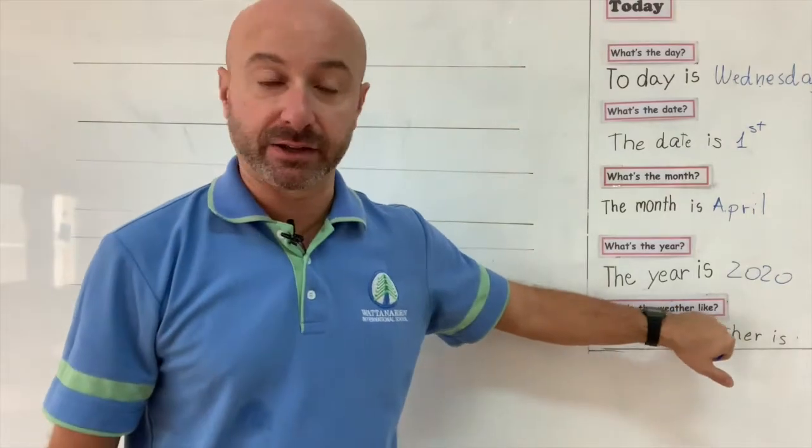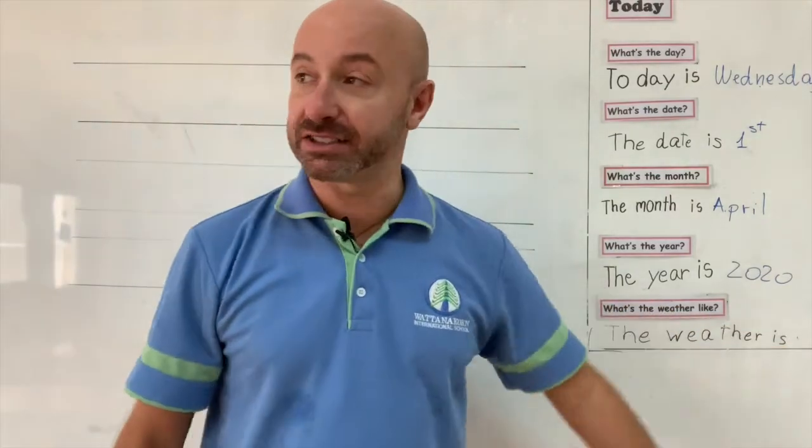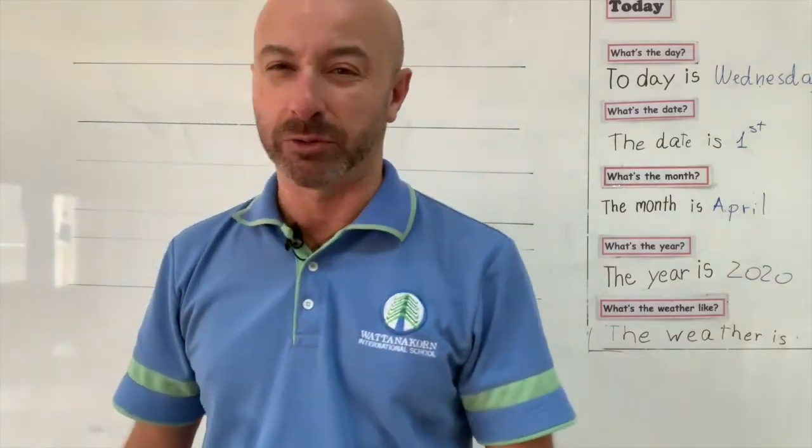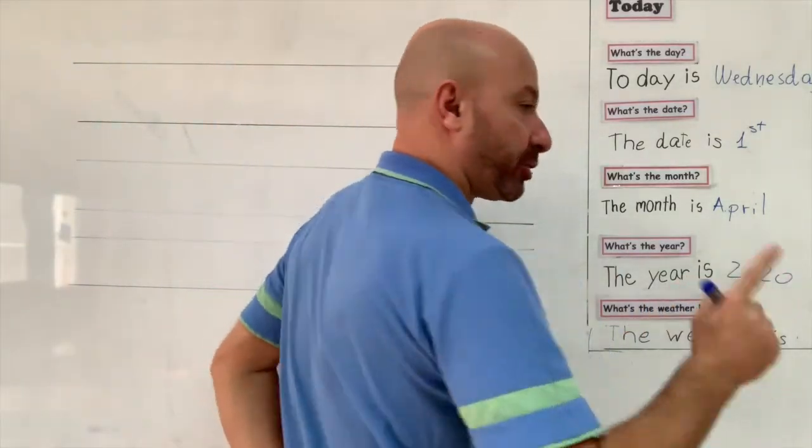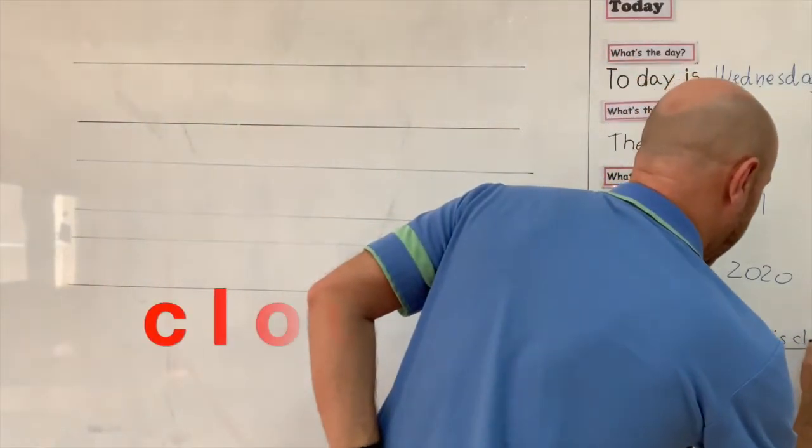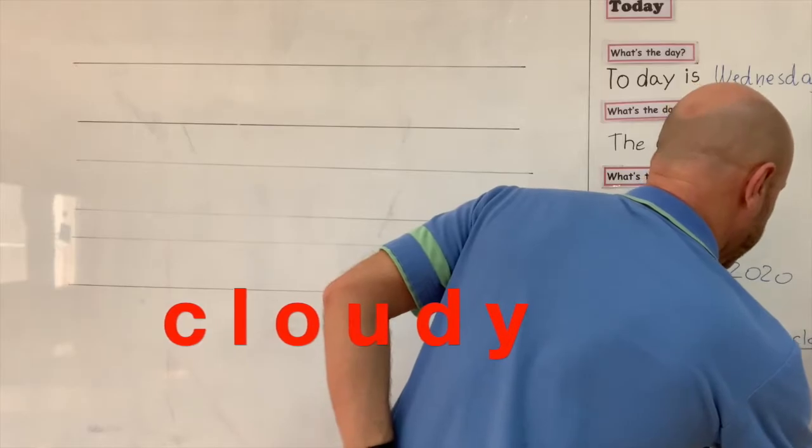What's the weather like? The weather is, we have to look through the window and outside I think it's a bit cloudy. So we write cloudy. You remember how to spell cloudy? C L O U D Y.